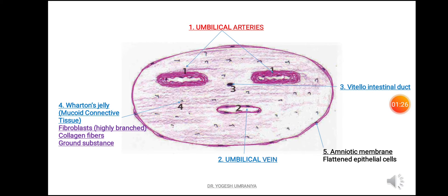Number 3 is the vitello-intestinal duct, which is the duct connecting the yolk sac with the midgut area. Number 4 is the mucoid connective tissue, also known as Wharton's jelly. This area is mainly occupied by highly branched fibroblast cells as well as collagen fibres and the ground substance. At the most outer periphery of the umbilical cord you will see the amniotic membrane, which is structurally made up of flattened epithelial cells.